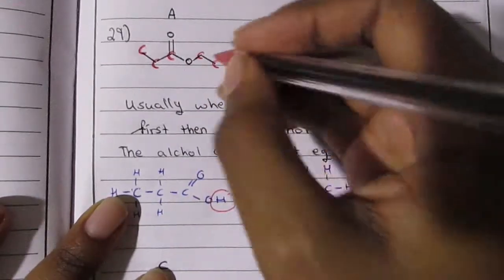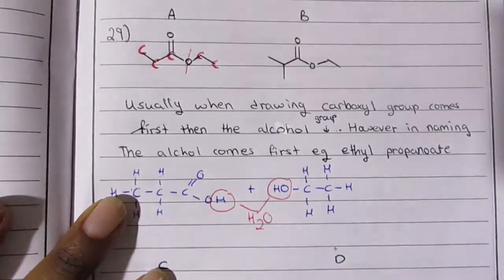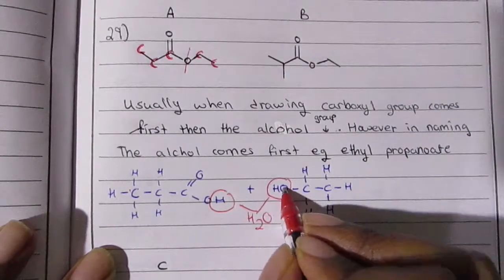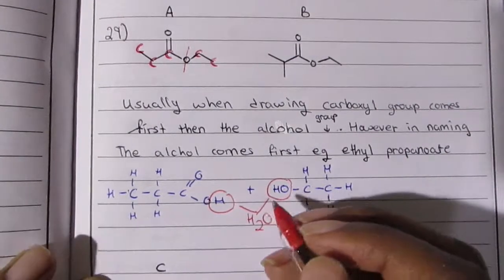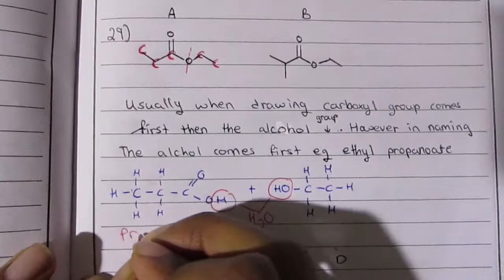Now if you want to name this, this will be ethyl propanoate, because again, in the naming, the alcohol comes first and then the carboxylic acid. So now if you want to answer this question, A would be the answer.